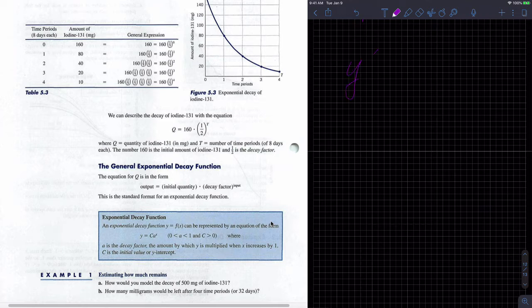So here's an example that everybody showed you the answer. Hopefully you don't scrub back. So how would you model decay of 500 milligrams of iodine-131? Since we know that we can do the following, we can have some starting amount, but A is one-half, and T is the amount of time periods.